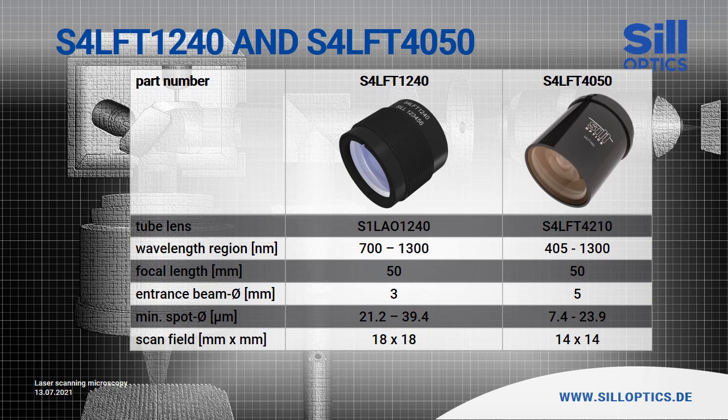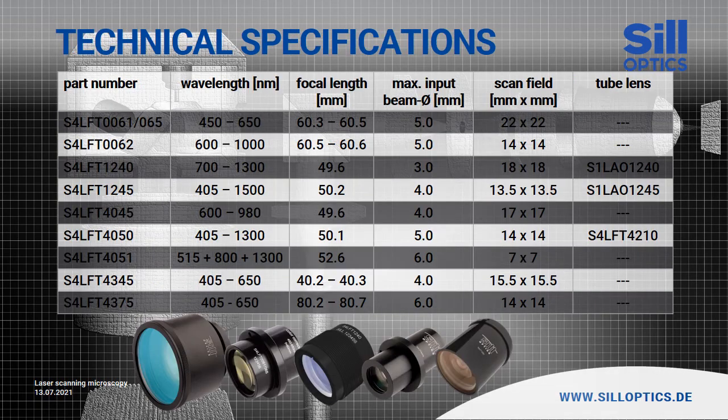The focal length of the two lenses is approximately 50 mm. Here you can see all existing laser scanning microscope lenses and some technical specifications. Of course, you can always ask for the more detailed datasheet.